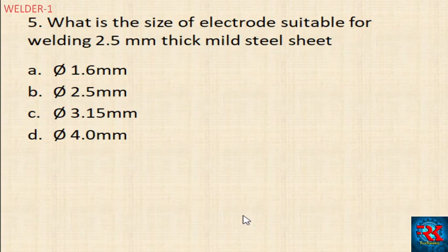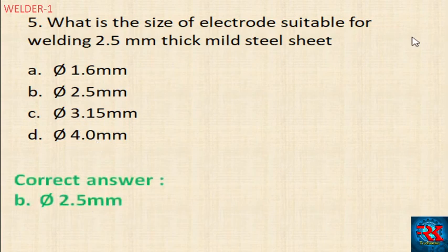What is the size of electrode suitable for welding a 2.5mm thick mild steel sheet? The options for core diameter are: 1.6mm, 2.5mm, 3.15mm, and 4mm. The appropriate electrode size is selected based on the plate thickness.